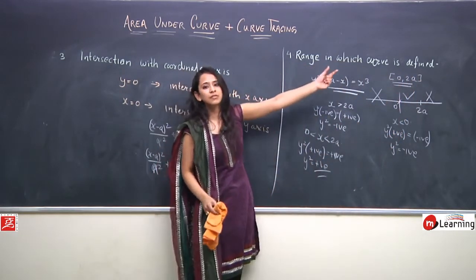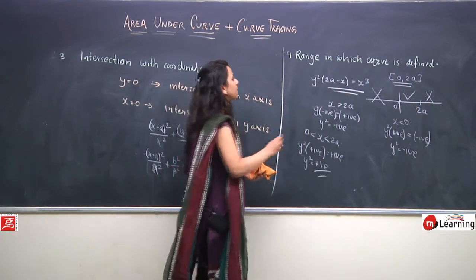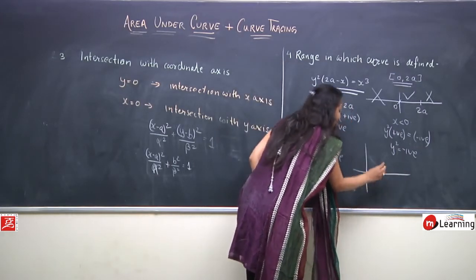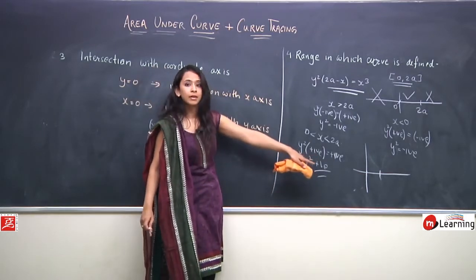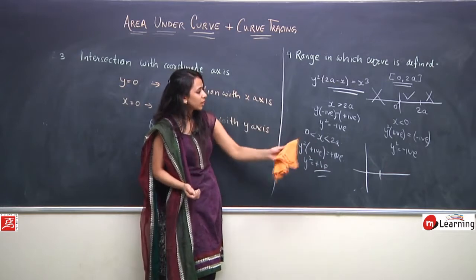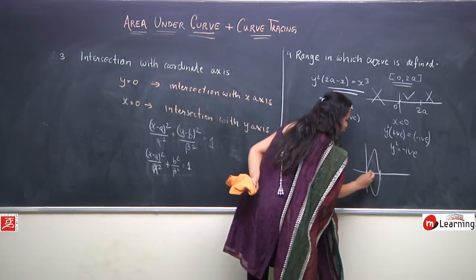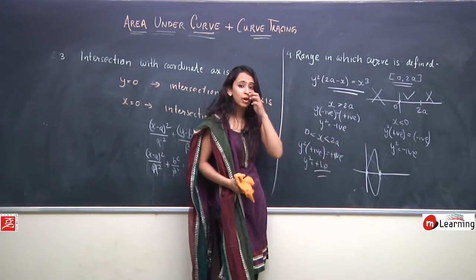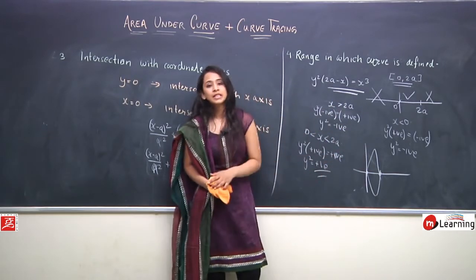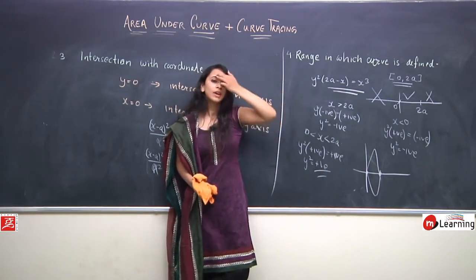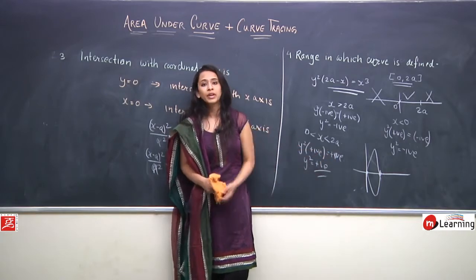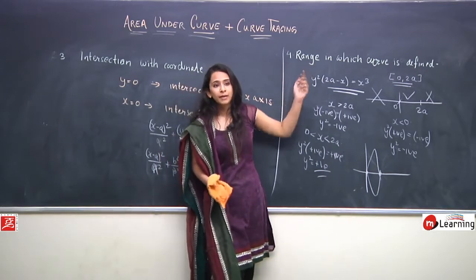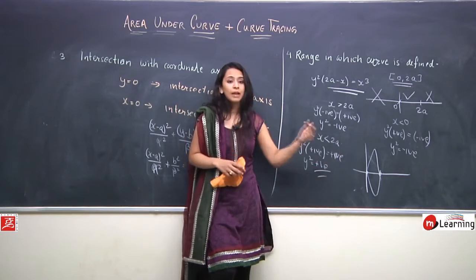The range in which this curve is defined is only 0 to 2a. Outside this, the curve is not defined. So when plotting, the curve exists only from x = 0 to x = 2a. The curve has value 0 at both x = 0 and x = 2a. To determine whether it goes up or down, we will discuss concavity in the next characteristic.